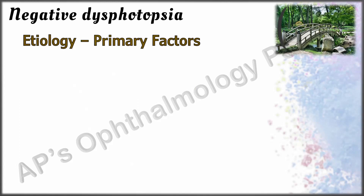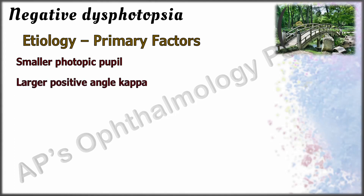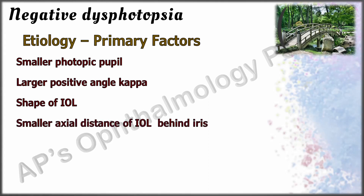The primary factors associated with negative dysphotopsia are a smaller photopic pupil, larger positive angle kappa, shape of the IOL with a steeper posterior surface, and a smaller axial distance of the IOL behind the iris.